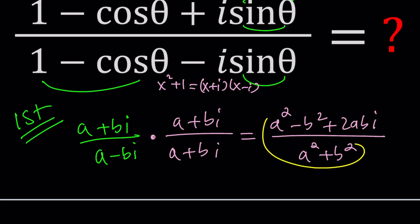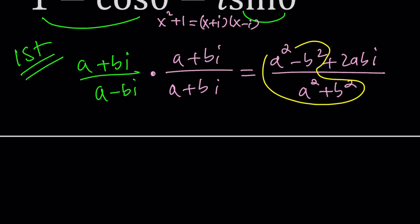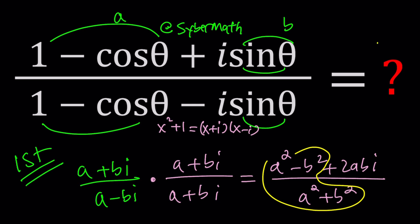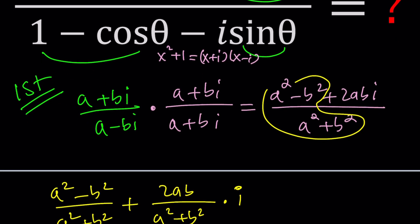So now we can separate these. A squared minus B squared divided by A squared plus B squared plus 2AB divided by A squared plus B squared. And that is multiplied by I. So that would be the imaginary part. So it looks like in the simplest form, this is the answer. The result is also a complex number. Now all you have to do is replace A and B with what they are.